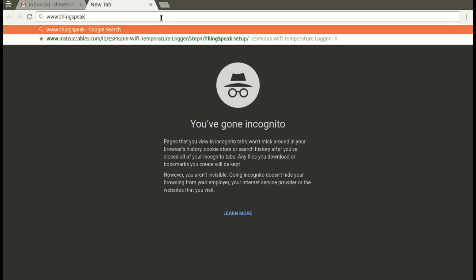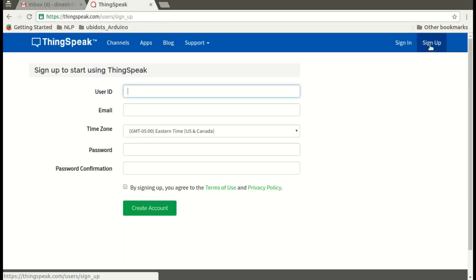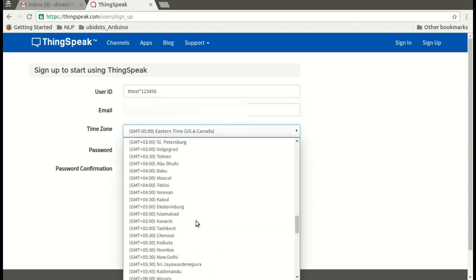Next you need to create a channel on ThingSpeak.com. Go to ThingSpeak.com, click on sign up, enter user ID and your email address, give a proper time zone, give proper passwords, then click on the check box agreeing to terms and condition and click on create account.